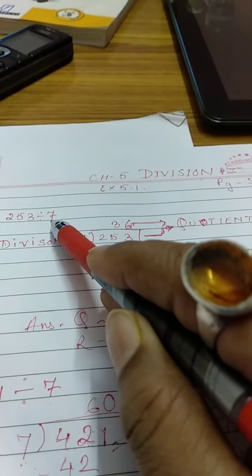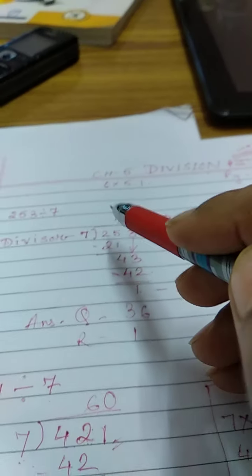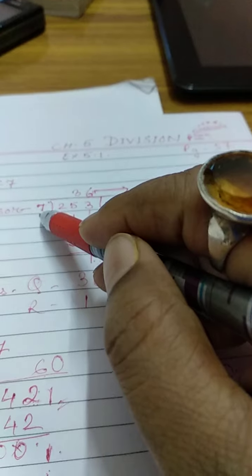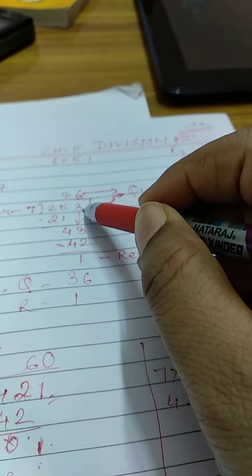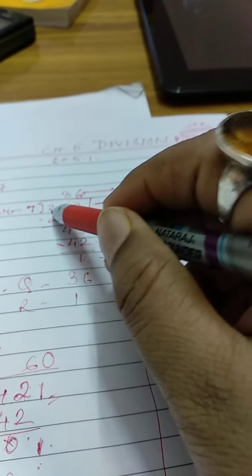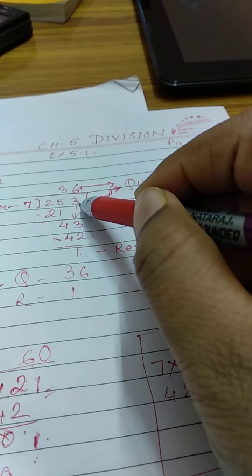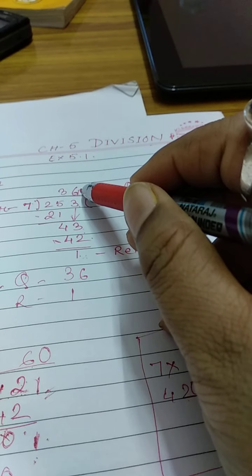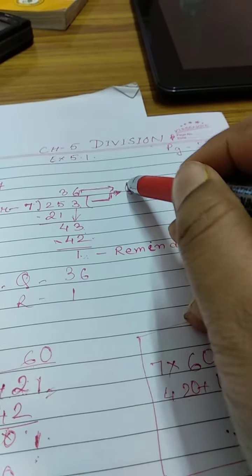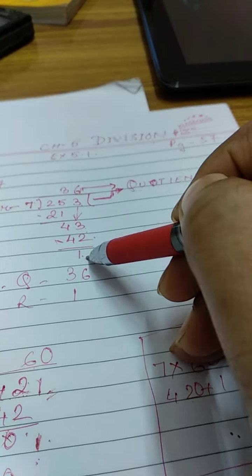Now here, 253 divided by 7. 7 is divisor, so I am writing it here and 253 is dividend. We will write and give a bracket and then I am writing. Whatever we get by dividing is known as quotient. If anything is remaining, that is known as remainder.